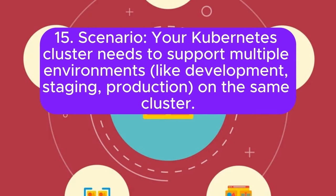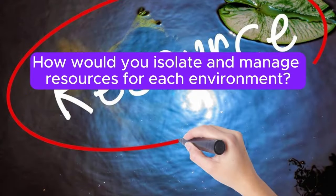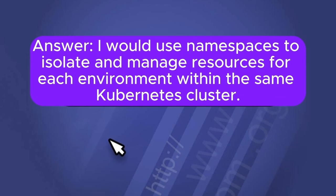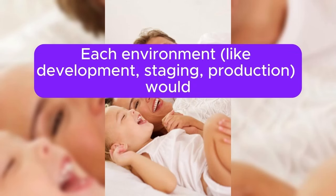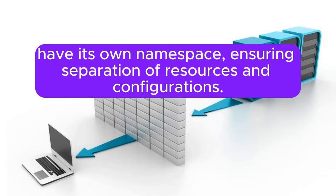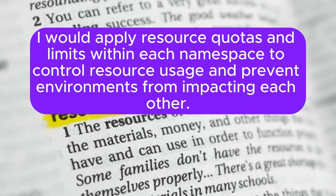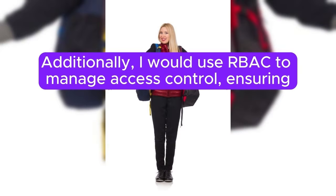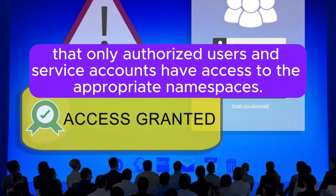Scenario 15: Your Kubernetes cluster needs to support multiple environments like development, staging, and production on the same cluster. How would you isolate and manage resources for each environment? Answer: I would use namespaces to isolate and manage resources for each environment within the same Kubernetes cluster. Each environment would have its own namespace, ensuring separation of resources and configurations. I would apply resource quotas and limits within each namespace to control resource usage and prevent environments from impacting each other. Additionally, I would use RBAC to manage access control, ensuring only authorized users and service accounts have access to the appropriate namespaces.